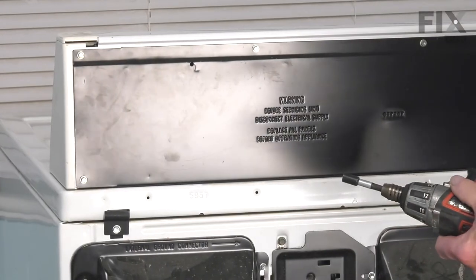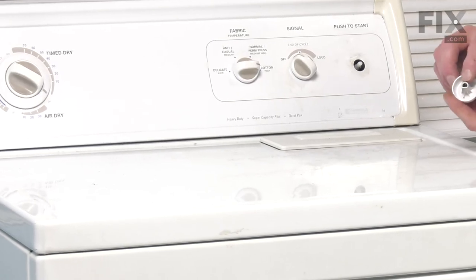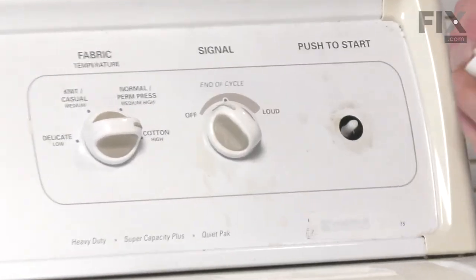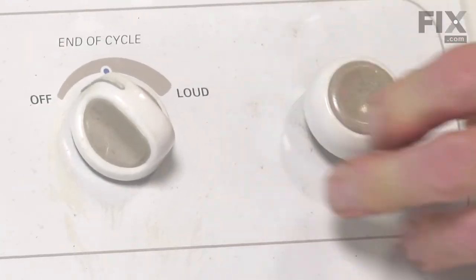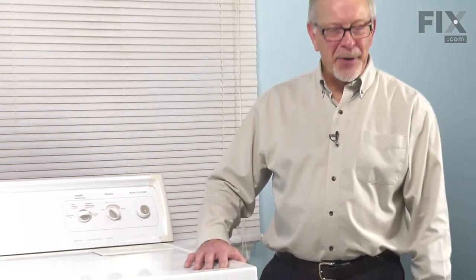Now, we can position the dryer back into place. We'll reinstall that knob. Again, make sure that the insert is in the old knob. Line up the flat side of the switch. Press that knob firmly into place. We're now ready to push the dryer back into position, reconnect the power, and your repair is complete.